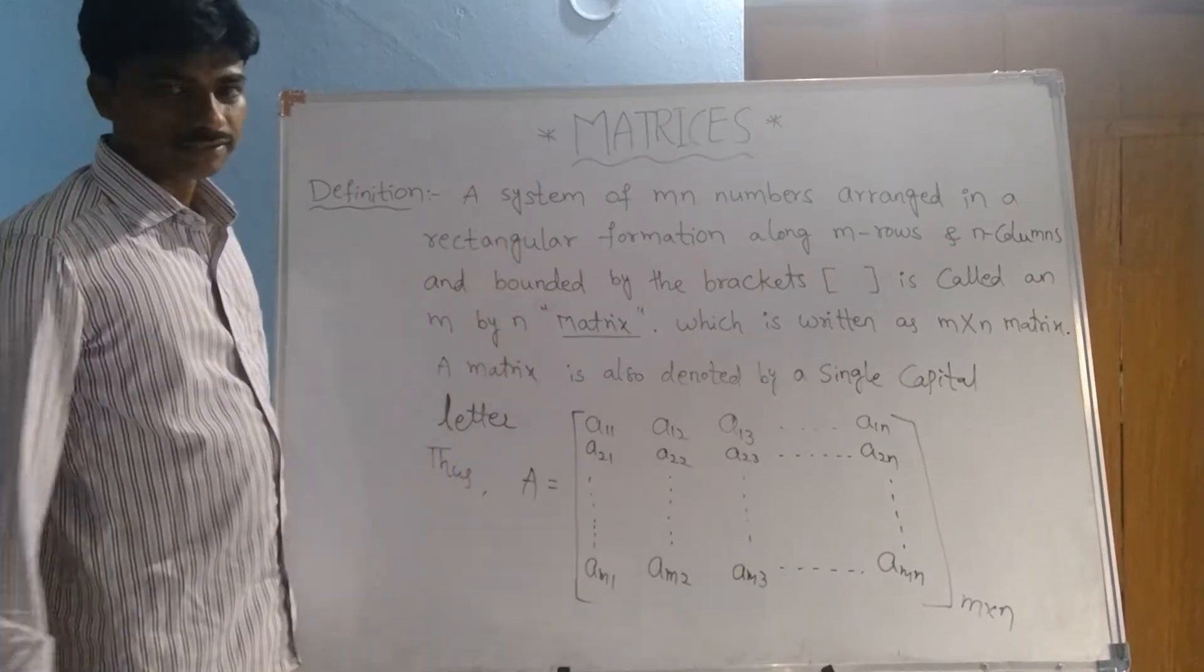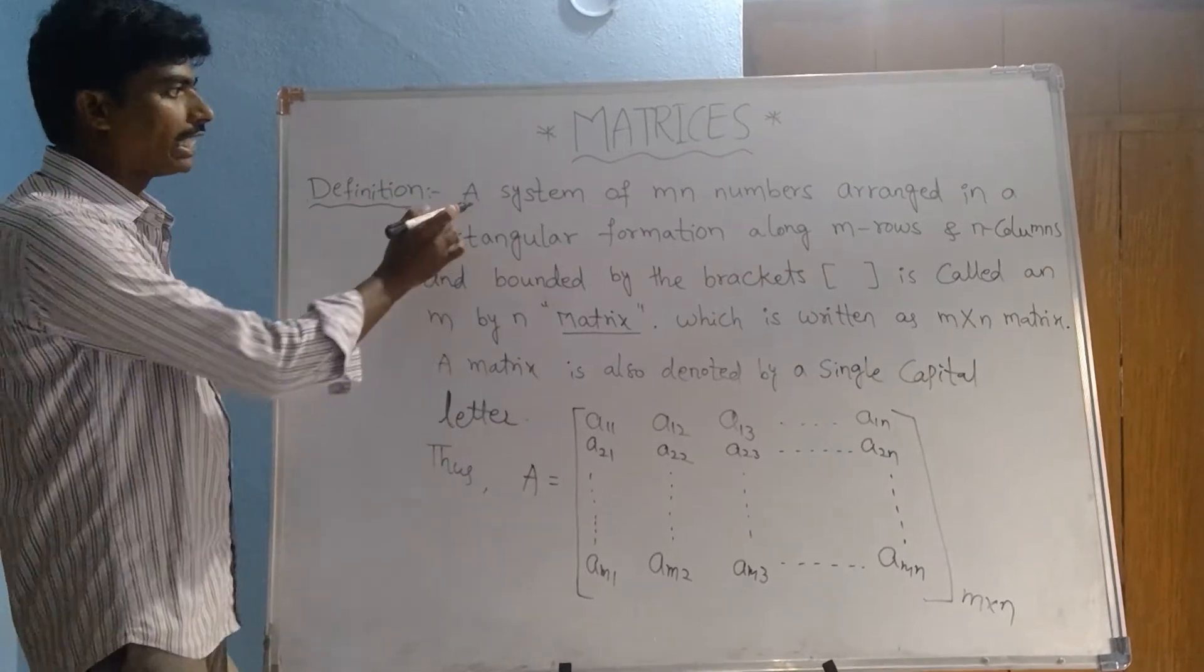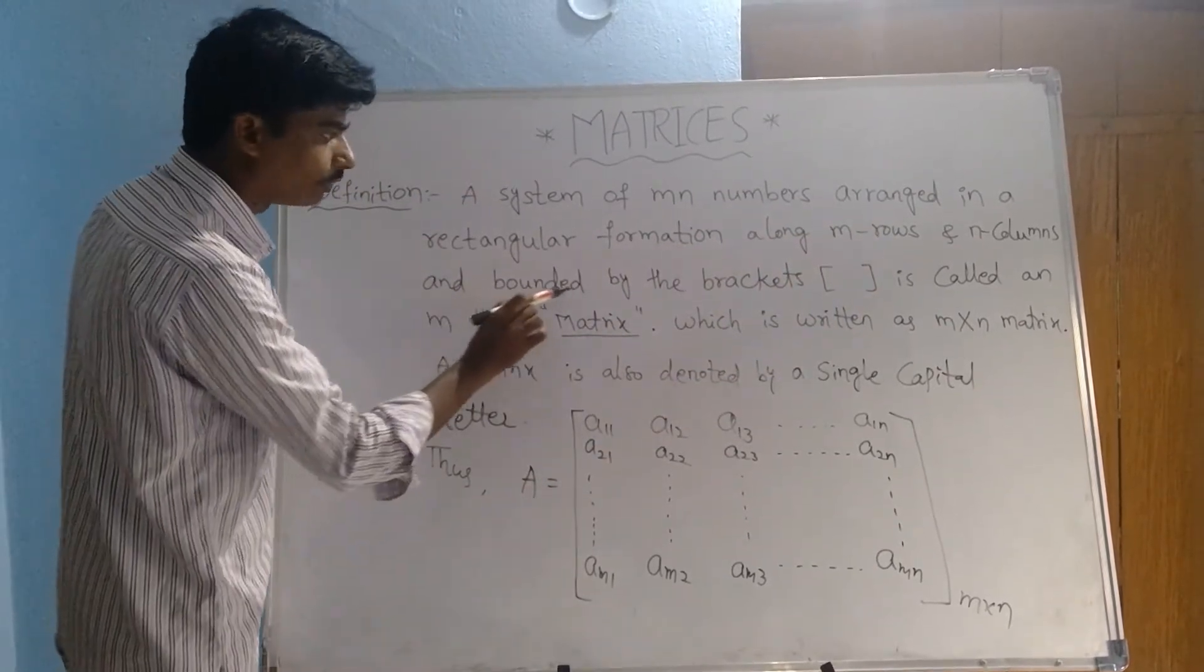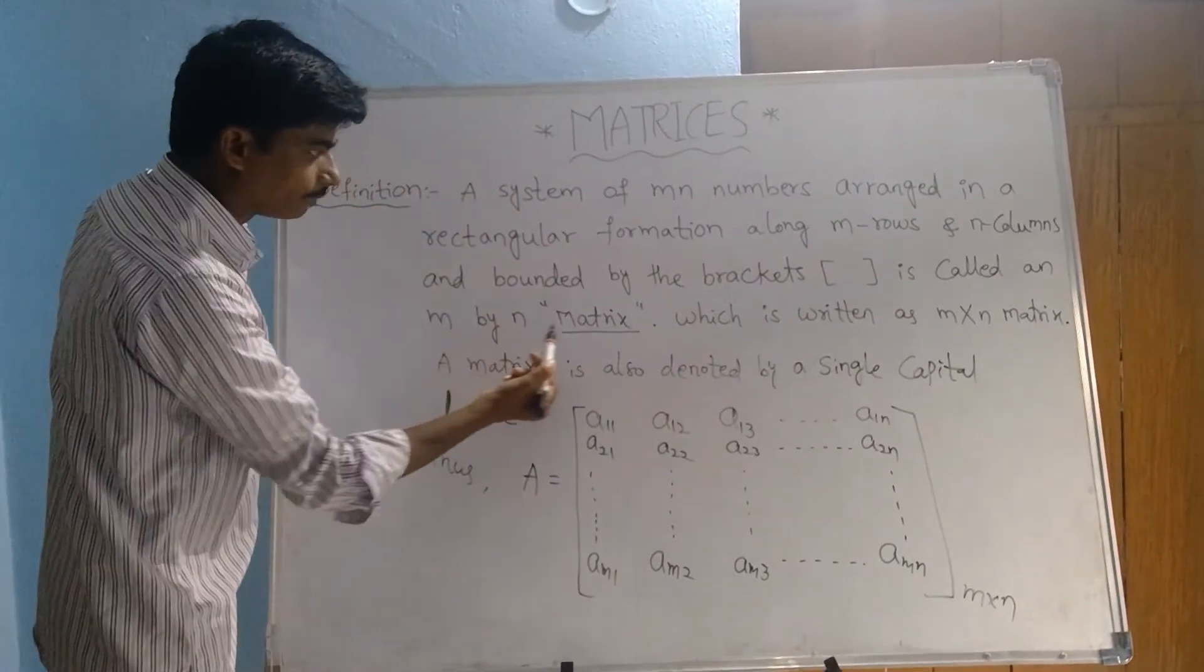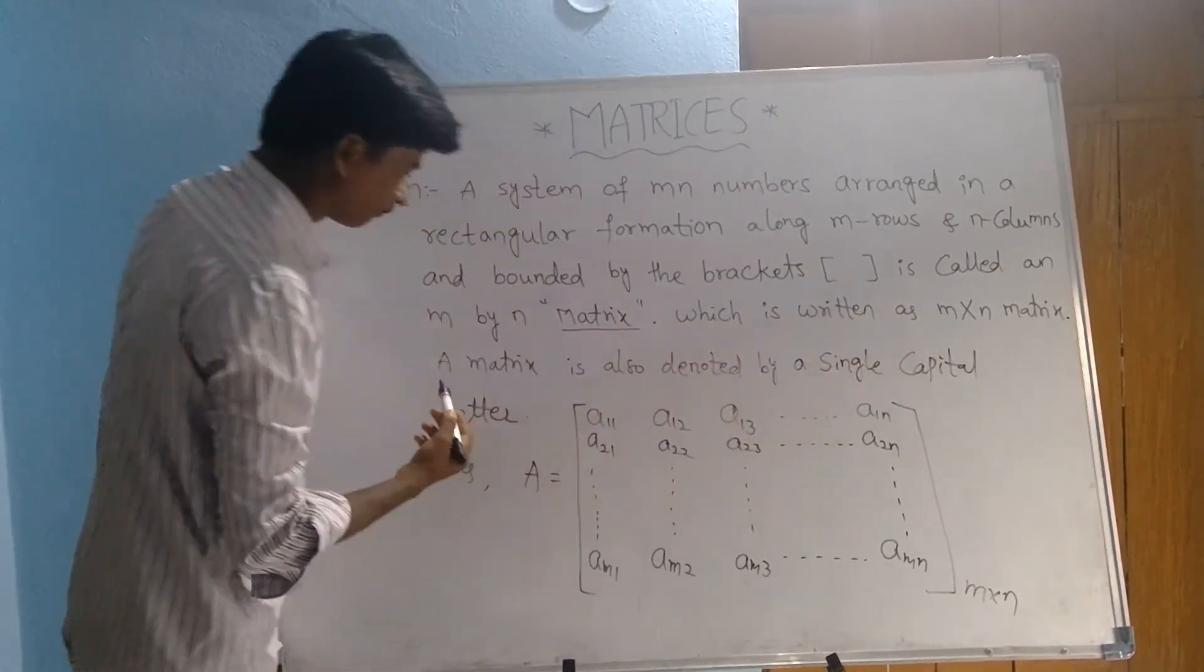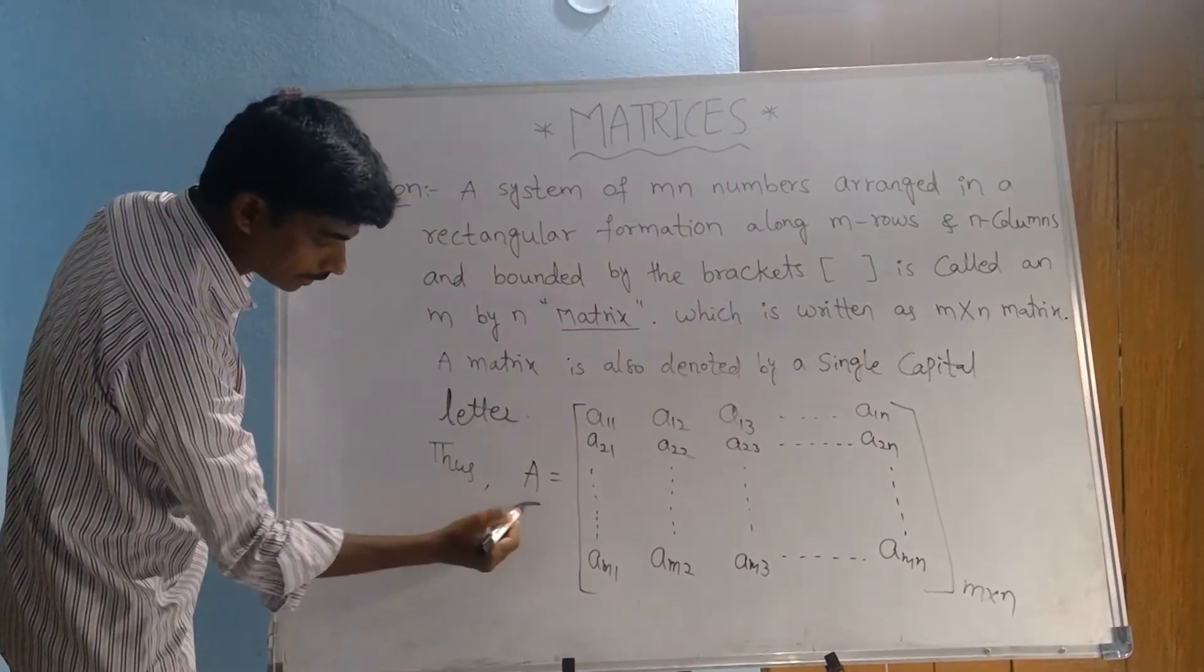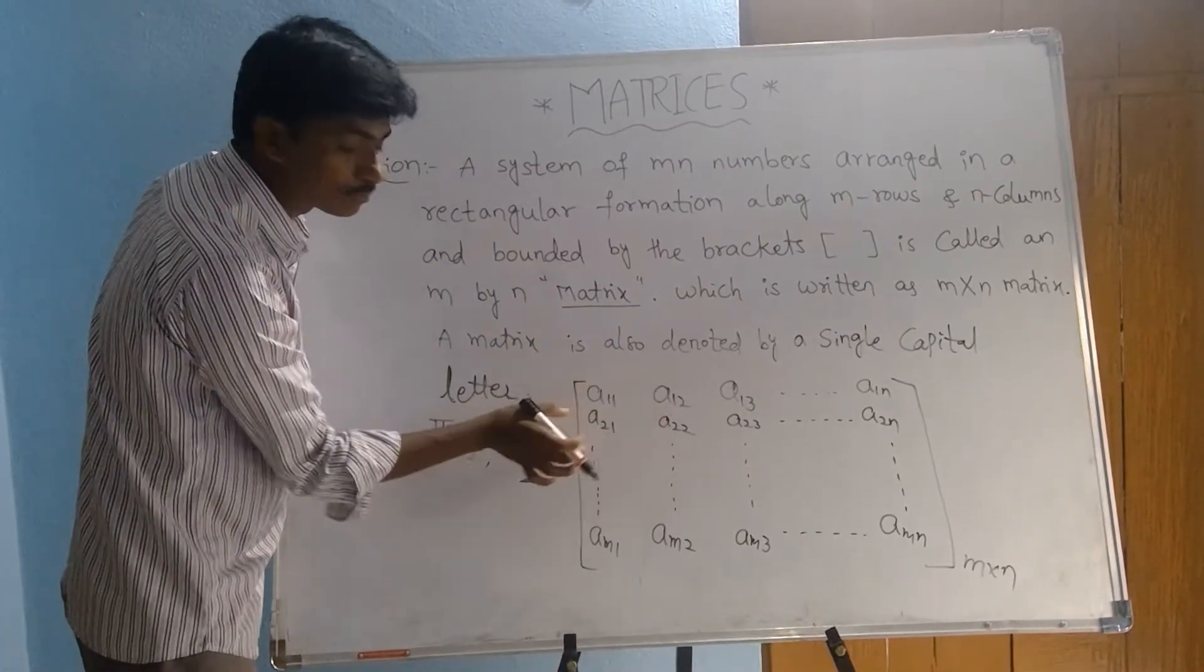Today I am going to explain matrices. First, matrices is a definition. A system of M by N numbers arranged in a rectangular formation along M rows and N columns and bounded by the brackets is called an M by N matrix. A matrix is also denoted by a single capital letter. Matrices are denoted as capital letters, elements as small letters.